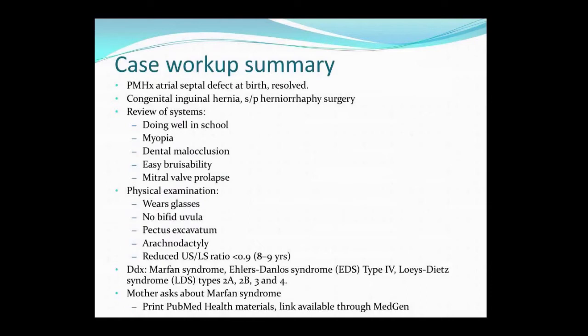The boy arrives in clinic with his mother. He has a past medical history of an atrial septal defect at birth, which has since resolved. He has a congenital inguinal hernia, which was surgically repaired. He does have myopia and needs to wear glasses. He has dental malocclusion, and his dentist has already discussed braces with his mother. His mother reports that he bruises easily. During physical exam, it's noticed that his breastbone appears sunken in. He has a reduced upper segment to lower segment ratio. You also note that he exhibits arachnodactyly, but a quick check reveals that he does not have bifid uvula. Your differential diagnosis contains Marfan syndrome, EDS type 4, and several subtypes of Loeys-Dietz syndrome.